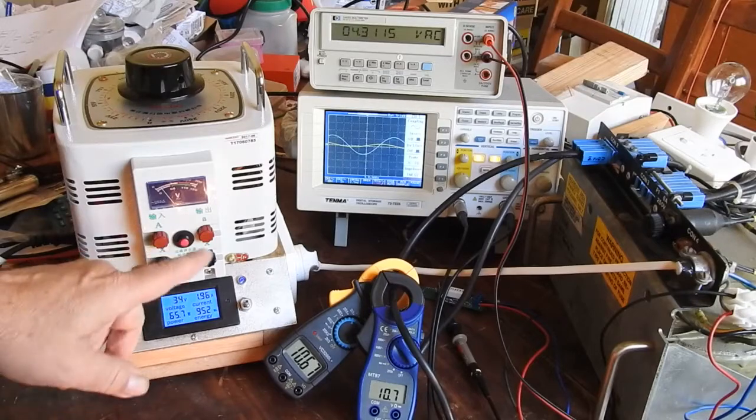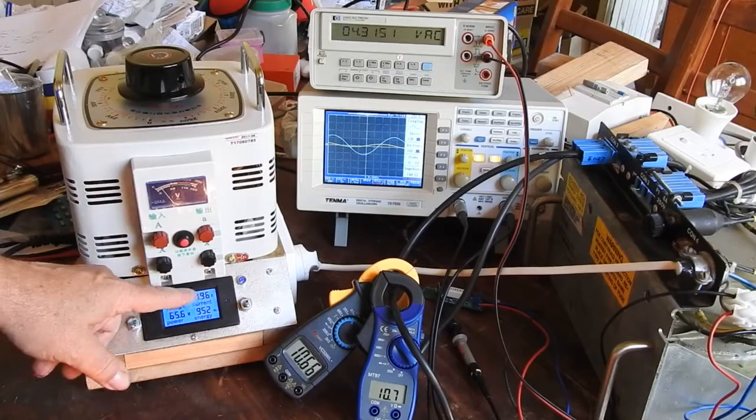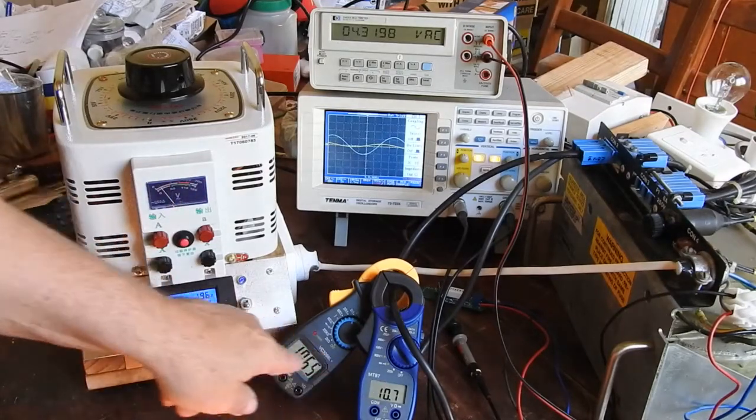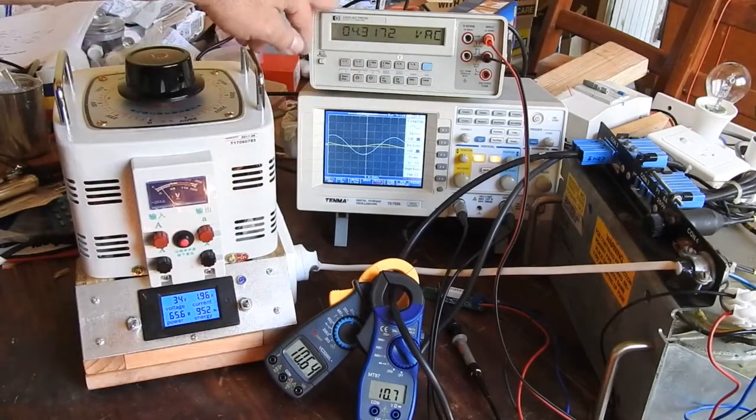So what we're looking at here is voltage coming out of the variac into the ferro transformer and the current. The current coming out of the secondary as measured by two crappy clamp meters, the voltage on the secondary.